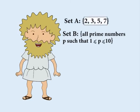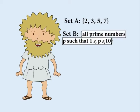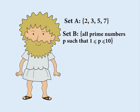For example, set A is made up of these numbers. And set B is the set of all prime numbers between 1 and 10. 2, 3, 5 and 7 are all the prime numbers between 1 and 10. So set A equals set B.